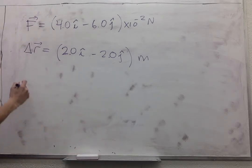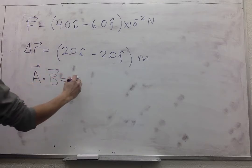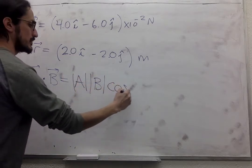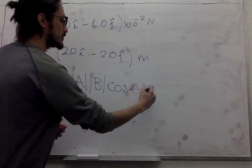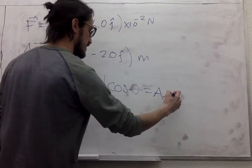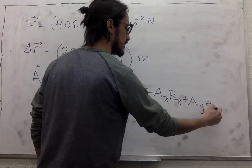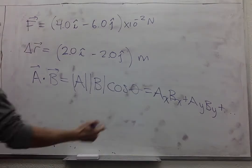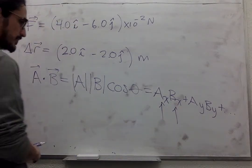And if you remember the definition of the dot product, A dot B is magnitude of A, magnitude of B, cosine of the angle between them. Doesn't look very useful. This is also equal to A x B x plus A y B y plus more stuff that you might have over there. So we just have to multiply the appropriate components for each vector.